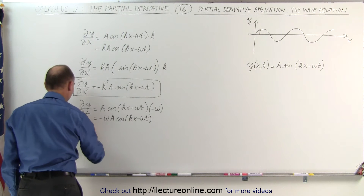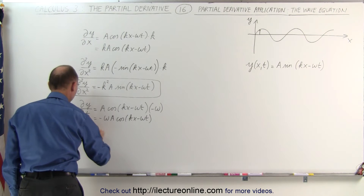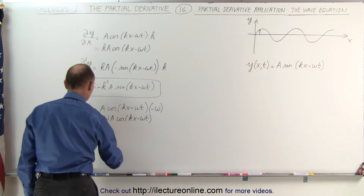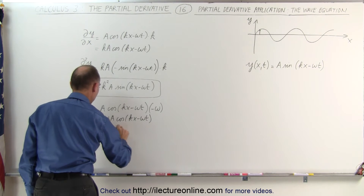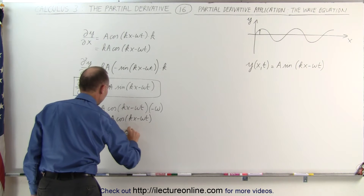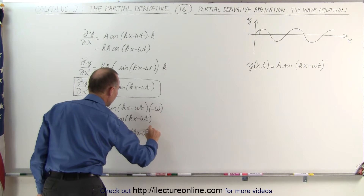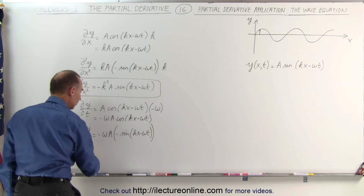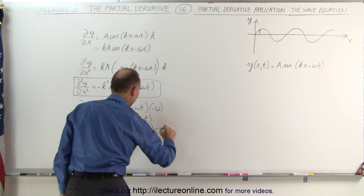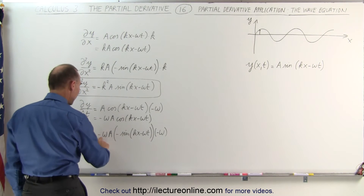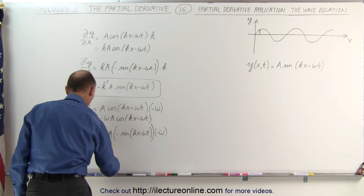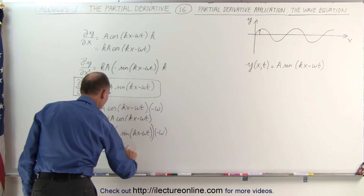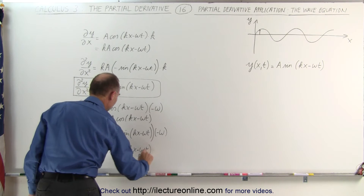Now we take the second partial derivative of the function with respect to time. That gives us the negative sine, so minus omega times A, times the negative sine of kx minus omega t, times the derivative of the angle again with respect to t, that becomes a minus omega. Which means this is equal to minus times minus times minus, which is minus omega squared A times the sine of kx minus omega t.